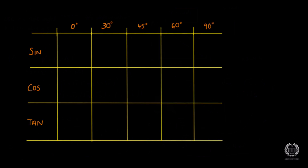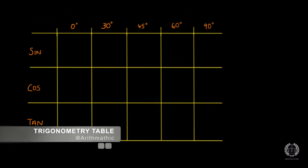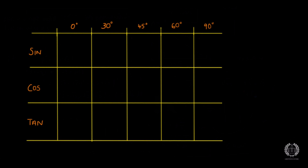Hi guys, welcome back to another video tutorial. In this tutorial, we'll be going over a topic that's been requested by a lot of my students: how to remember the sine, cosine and tan values for the different angles. In the exams you're going to do, these will come in a non-calculator paper, so you need to remember the values for the angles 0, 30, 45, 60 and 90 for sine, cos and tan, as shown in this table.